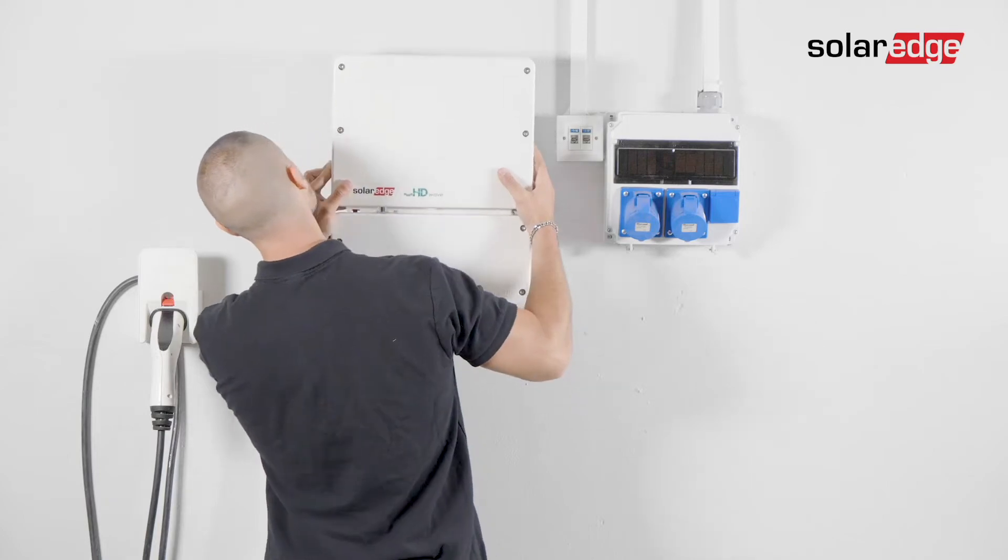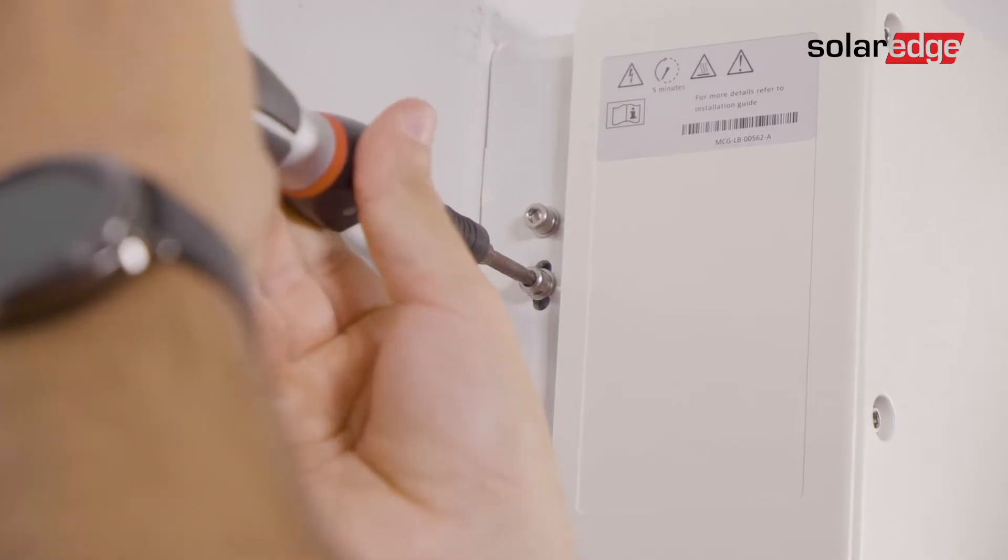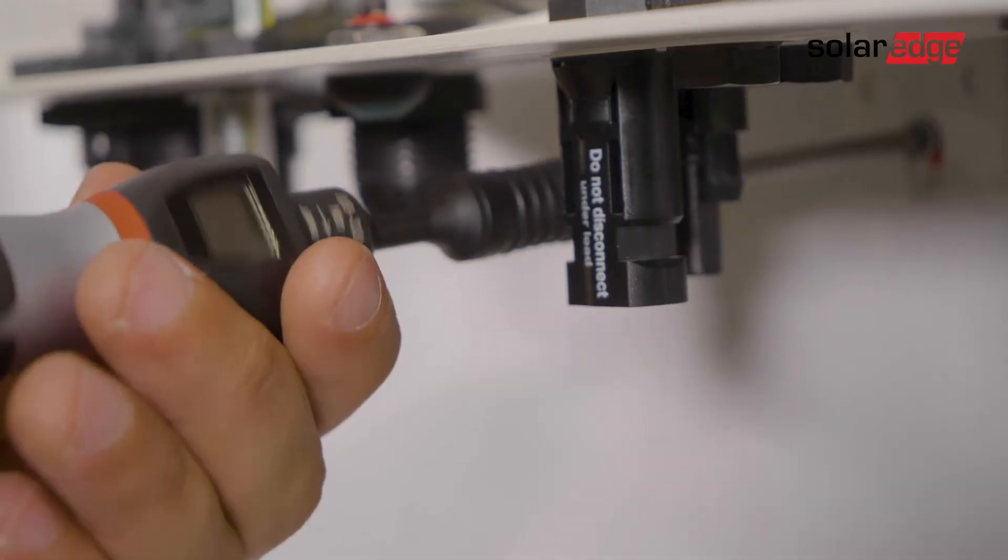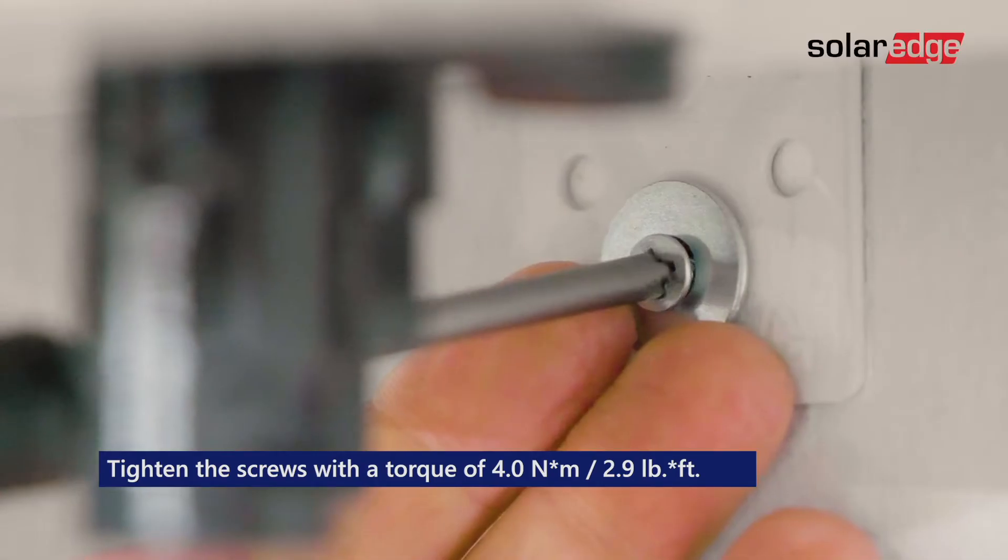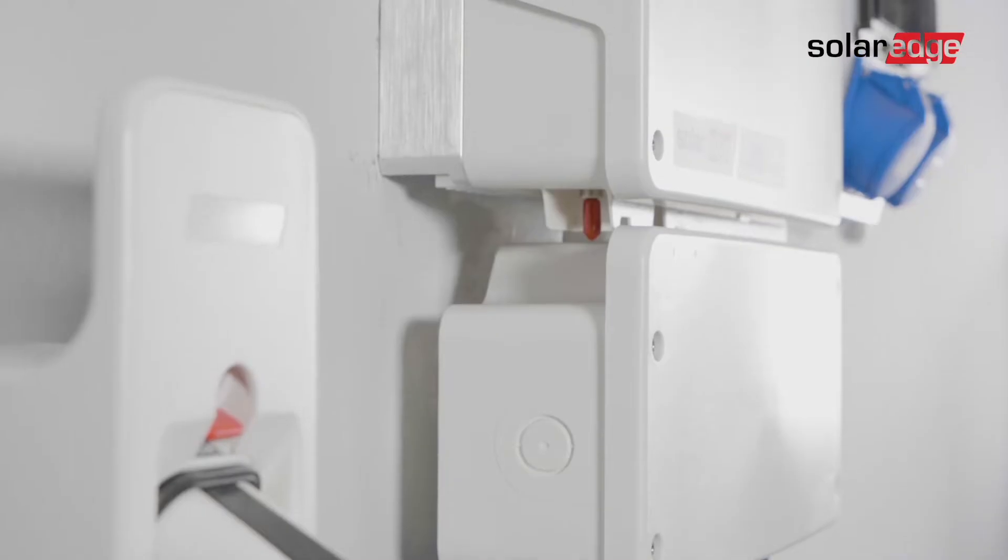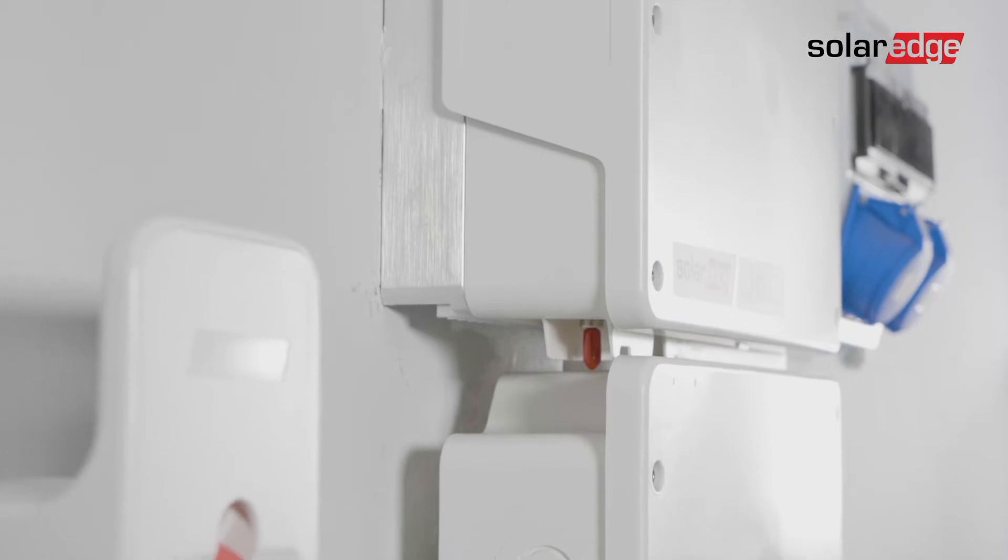Hang the inverter on the bracket and then insert the two supplied screws on both sides of the inverter and firmly tighten them to the bracket. Then secure the connection unit to the wall. The EV charging single phase inverter is now mounted.